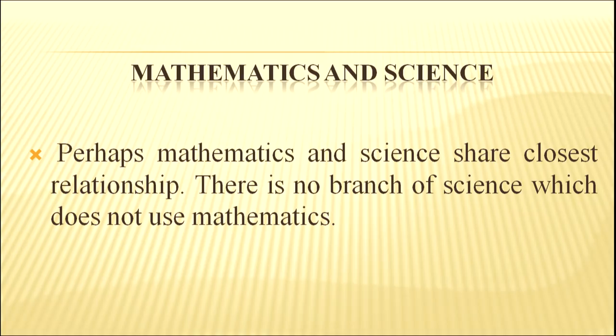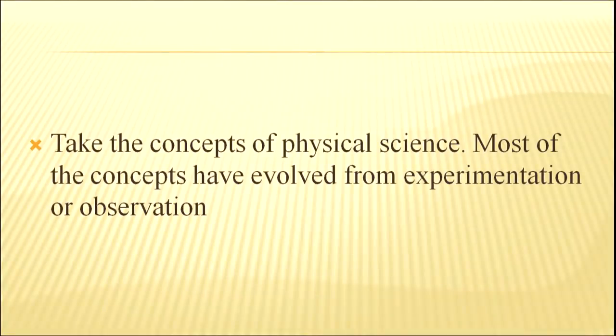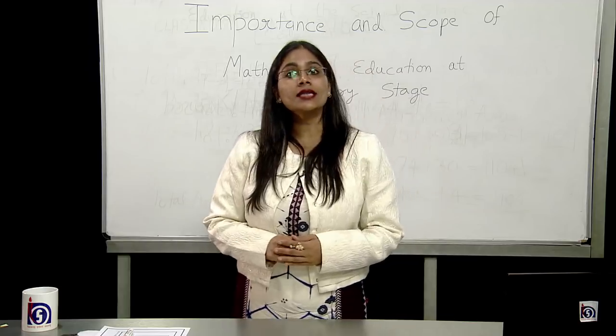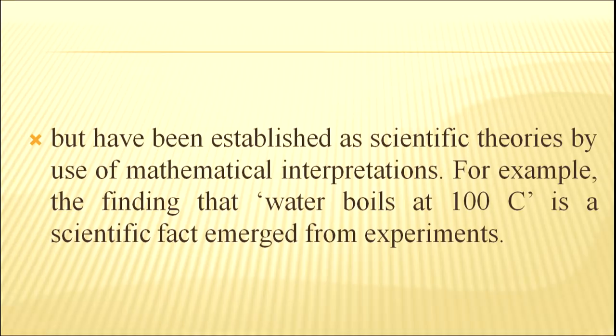Mathematics and science. Perhaps mathematics and science share the closest relationship. There is no branch of science which does not use mathematics. Take the concept of physical science. Most of the concepts have evolved from experimentations or observations but have been established as scientific theory by use of mathematical interpretations. For example, the finding that water boils at 100 degrees Celsius is a scientific fact emerged from experiments.